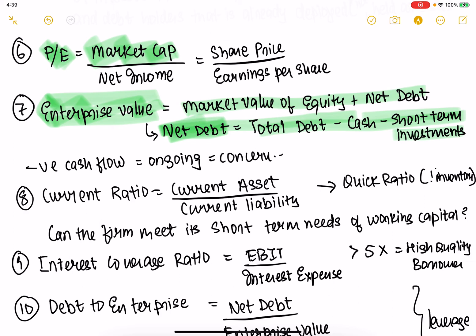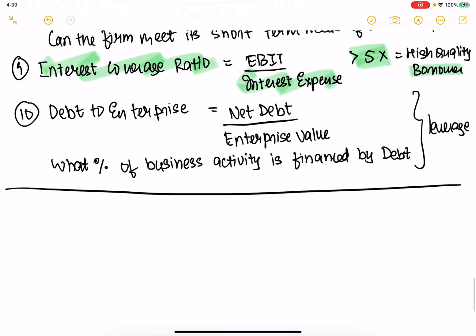Net debt equals total debt minus cash minus short-term investments — the total debt the company has to give. There are many forensics needed: if you see a constant set of negative cash flows, that could be a concern, but that's a separate chapter. If you want to find out leverage, you can look at current assets divided by current liabilities. The quick ratio doesn't include inventory.